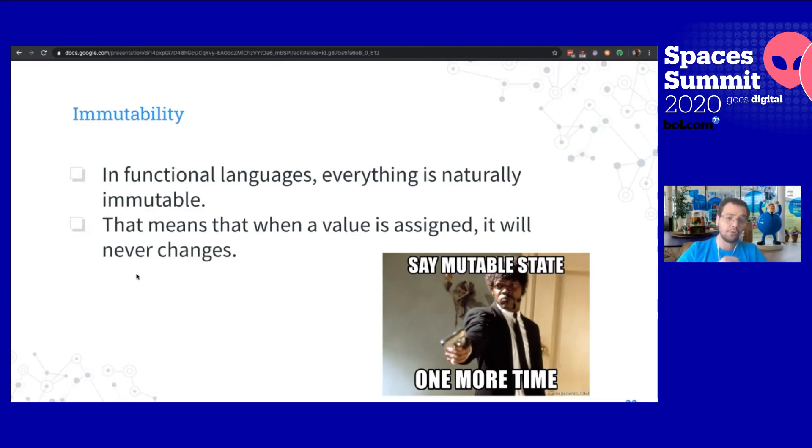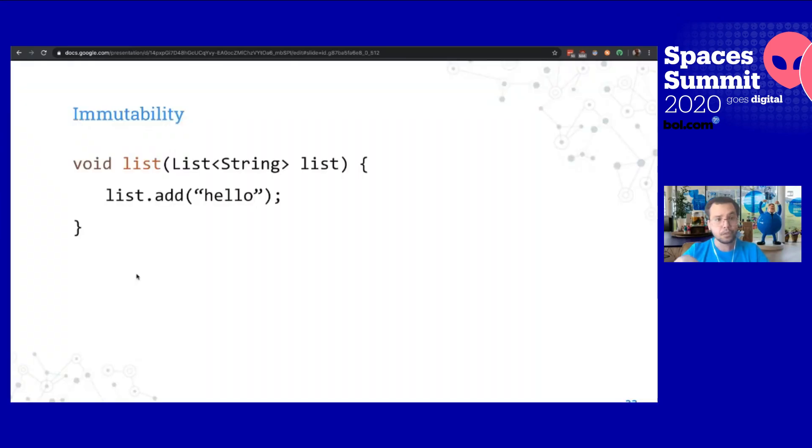Immutability. In functional languages everything is naturally immutable. That means that when a value is assigned, it will never change. People ask, so I have a variable? We don't have the idea of variables there. Yeah, we have variables, but the value of the variable can't be changed. You can reassign the variable but never change its state. Most people say that's not useful. Why would I want that? If I want a variable, I want to modify it. Well, probably you don't want to do that.